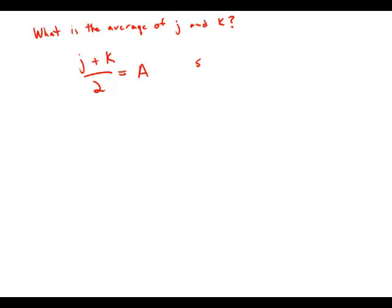If I know the sum of j and k, that would allow me to figure out the average. So really, any information that tells me either about the sum or the average would allow me to figure out the average of j and k.